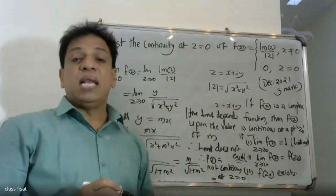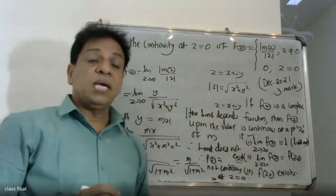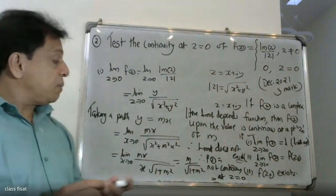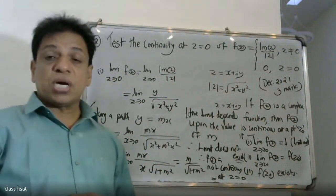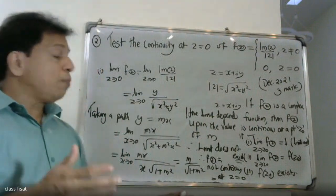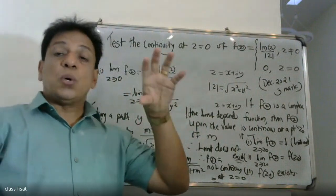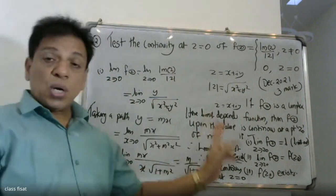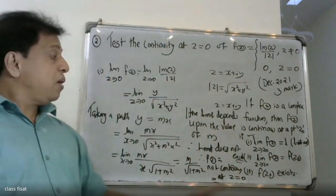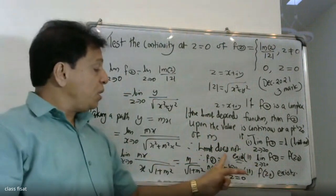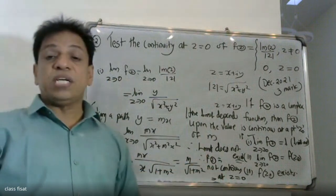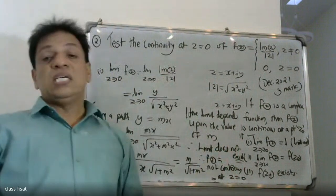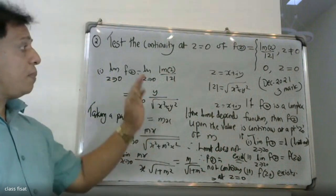The first condition requires a unique limit as z approaches zero. But the limit value is not unique — it depends on the path taken. Therefore, the limit does not exist. Since the first condition fails, we conclude that f of z is not continuous at z equal to zero.